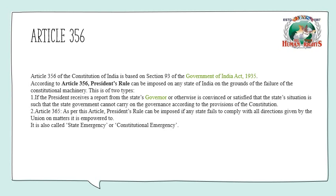The first condition is when the President receives a report from the state's Governor, or otherwise he is convinced that the state's situation is such that the state government cannot carry on the governance. The second condition is when the conditions of Article 365 are fulfilled.